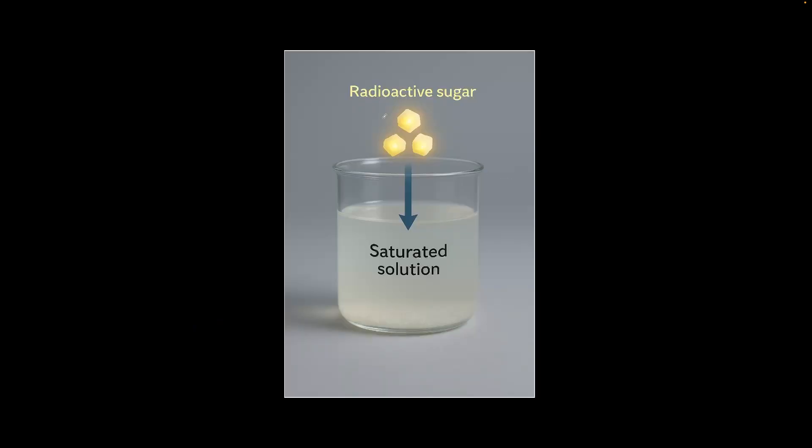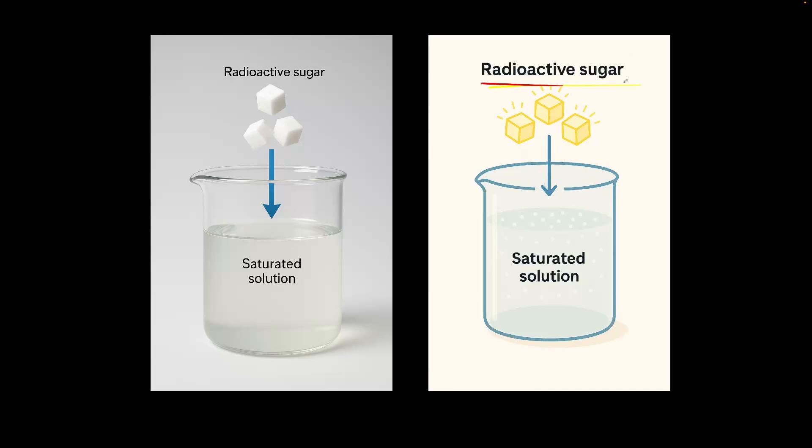So in this case, we design an experiment using radioactive sugar, and we put that into a saturated sugar solution. And that gives us a very important clue. This is how. So we have this radioactive sugar that we drop into the saturated solution. Because since this solution is saturated, there's nothing at the bottom at this point, there's no sugar in a crystal form.